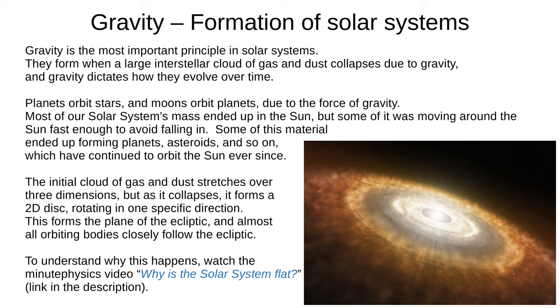Most of our solar system's mass ended up in the Sun, but some material was moving around the Sun too fast to fall in. Some of this material forms planets, asteroids and so on, which have orbited the Sun ever since.